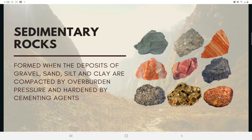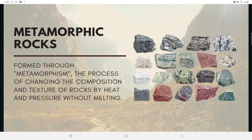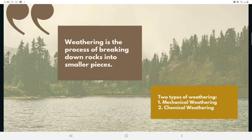Sedimentary rock may undergo weathering to form sediments, or may be subjected to metamorphism to become metamorphic rock. Metamorphism is the process of changing the composition and texture of rocks by heat and pressure without melting. During metamorphism, new minerals are formed and mineral grains are sheared to give a foliated texture. Under extreme pressure and heat, metamorphic rocks may melt to form magma, and the cycle is repeated.